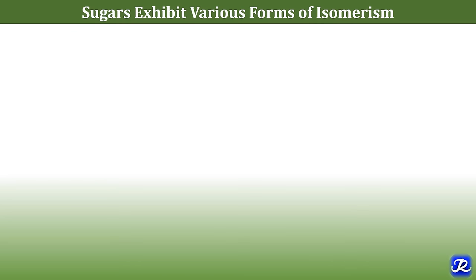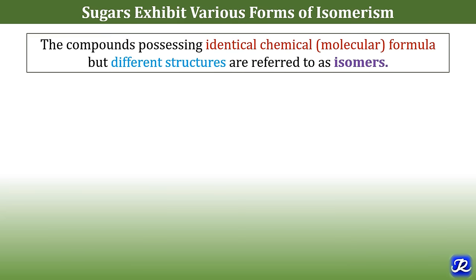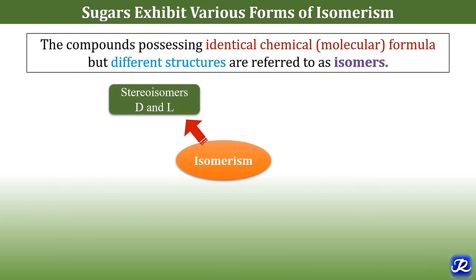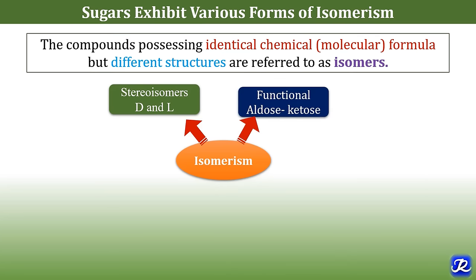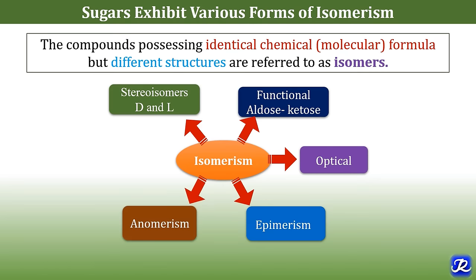Sugars exhibit various forms of isomerism. Isomers are compounds possessing identical chemical or molecular formula but different structures. There are various types of isomerism: stereoisomers — D and L isomerism; depending upon the functional group present, aldose-ketose isomerism; depending on optical activity, optical isomers, epimerism, and anomerism; and depending upon the presence of pyran and furan rings, there are pyranose and furanose forms of isomerism.